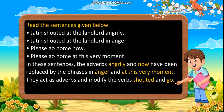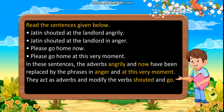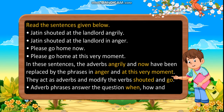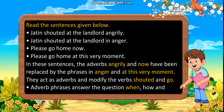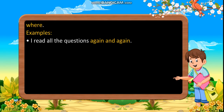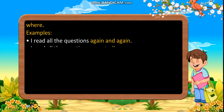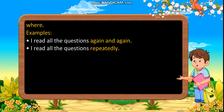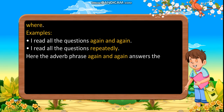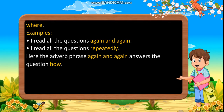These adverb phrases act as adverbs and modify the verbs 'shouted' and 'go.' Adverb phrases answer the questions when, how, and where. For example: 'I read all the questions again and again' — the adverb phrase 'again and again' answers the question 'how,' and can be replaced by the adverb 'repeatedly.'